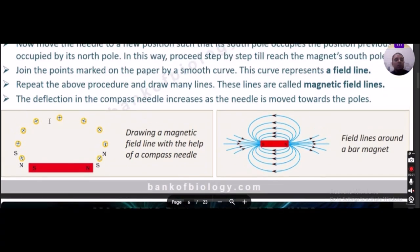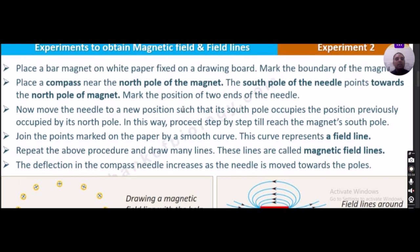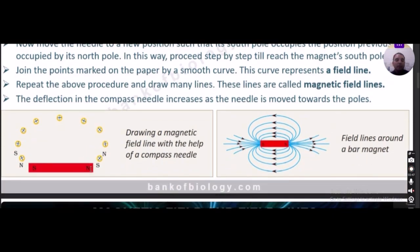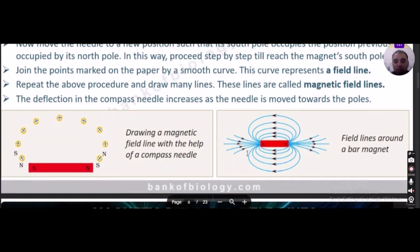Place a number of magnetic compasses; each needle will point in the direction of the field. Move the compass step by step such that the south pole occupies the position previously occupied by the north pole, continuing until you reach the south pole of the magnet. Join the marked points by a smooth curve — this curve represents a field line. The deflection of the compass needle increases as the needle is moved towards the pole.